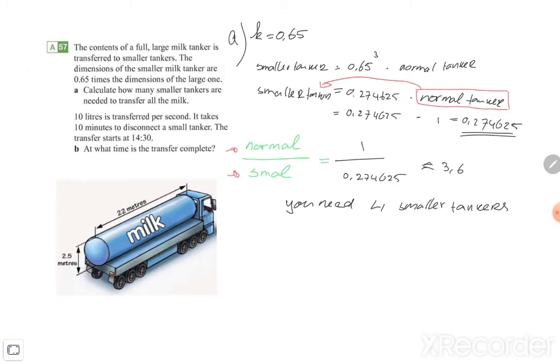So that's exercise A. Of course, because I just used the number 1 to fill in for the volume. If you like to calculate the volume of the real tanker, it's also allowed. Then you get another number for the smaller tanker, but if you still divide them, you still get 3.6.